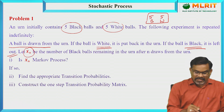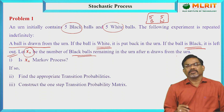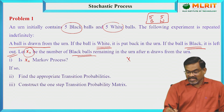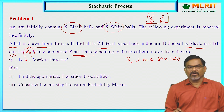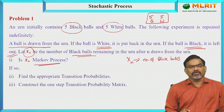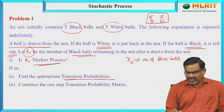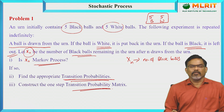Let x(n) be the number of black balls remaining in the box after n draws. The first question is: is x(n) a Markov process? The second question is: if so, find the appropriate transition probabilities and hence construct the transition probability matrix (TPM).